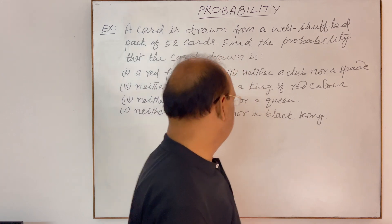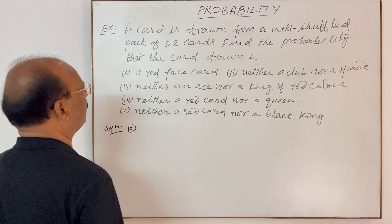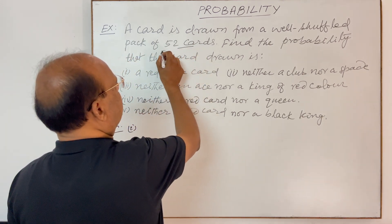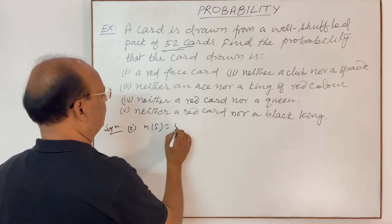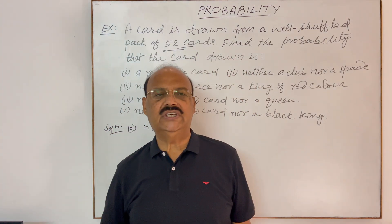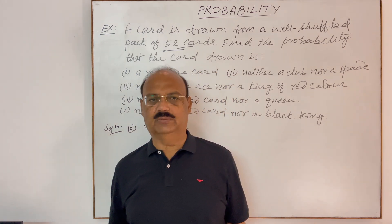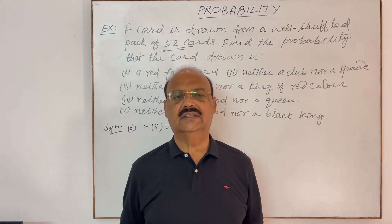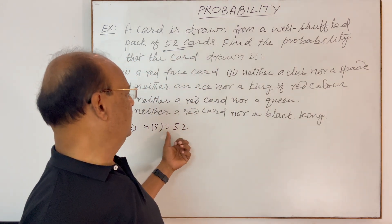Let us see the solution. Here, total number of cards is 52, so this is the sample space. Therefore n(S) is equal to 52. S is the sample space, which is the collection or set of all possible outcomes. Here 52 cards make a sample space, so the number of elements in this sample space is 52.